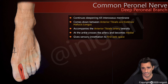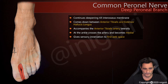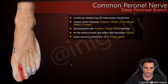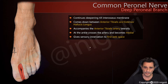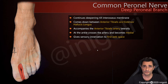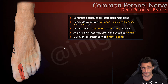The deep peroneal nerve provides sensory innervation to the first web space of the foot. It also provides motor innervation to the muscles of the anterolateral compartment: the tibialis anterior, extensor hallucis longus, extensor digitorum longus, and the pedis muscle — which is composed of the extensor digitorum brevis and extensor hallucis brevis muscles. All these muscles are innervated by the deep peroneal nerve.